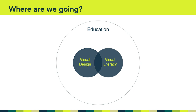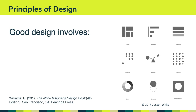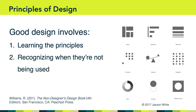As we said last week, we're at the intersection of visual design and visual literacy. Our path forward is to learn about the principles of design — such as layout, alignment, hierarchy, proximity, balance, repetition, and so forth. Williams, in The Non-Designer's Design Book, argues that good design involves three things: learning the principles of good design, recognizing when those principles are not being used, and actually applying them. We're going to be learning about those principles, recognizing when they're not being used, and then applying them to our own designs.